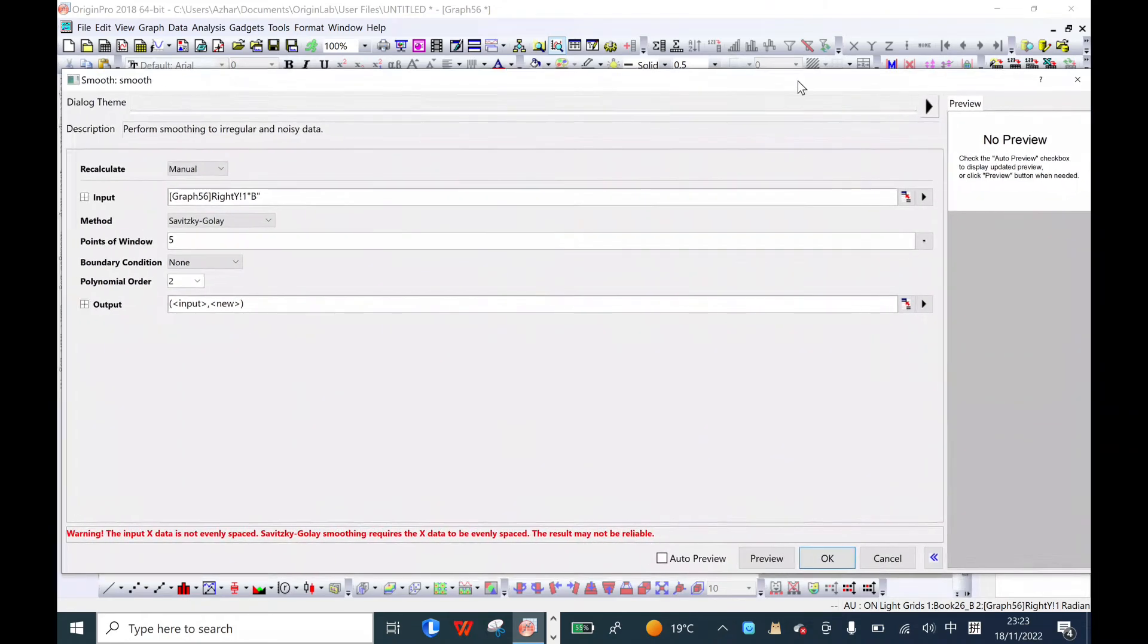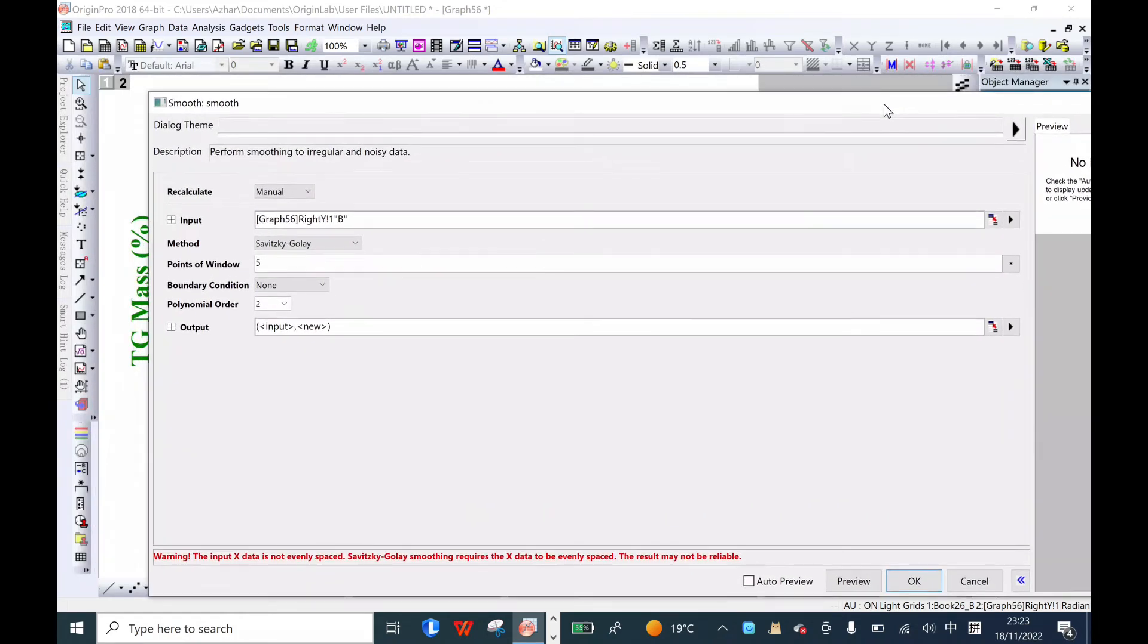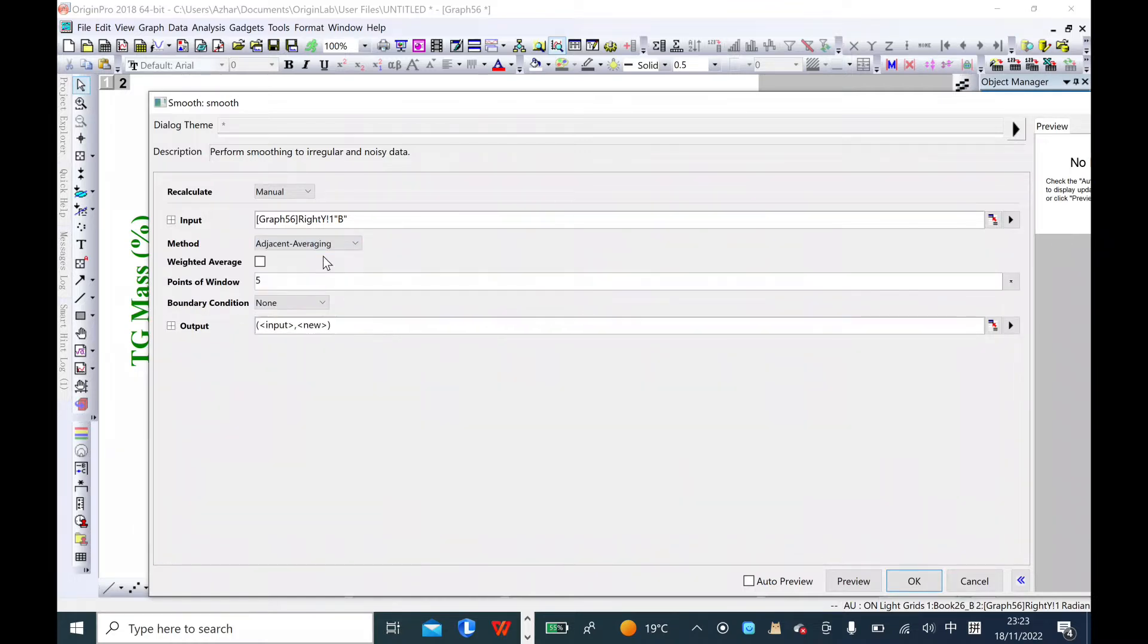The dialog will appear like this. What you're going to do is select here and choose Adjust Averaging. There are options for how many points you want to skip.